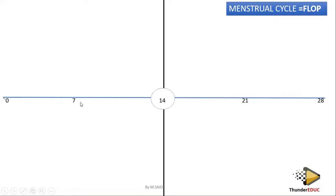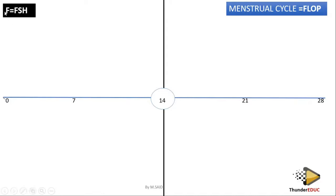Put your days of the menstrual cycle from day 0 up to day 14. Some students ask: do we have day 0? Yes — it's the time just before a full day begins, maybe six hours before. So day 0 sits there before it makes a full day. You put your days: 0, 7, 14, 21, and 28. Then label F for follicle-stimulating hormone.